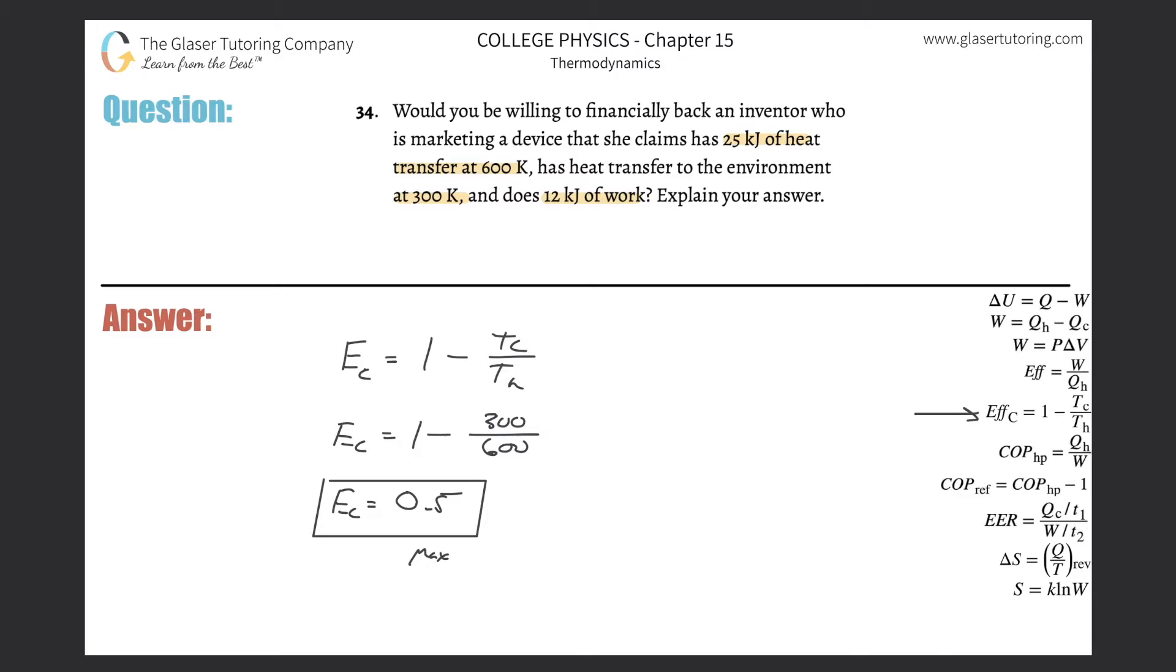The actual efficiency they're mentioning here in the problem is that it's doing 12 kilojoules of work, right? However, it's being added to the system is going to be 25 kilojoules of heat transfer. So essentially using now this particular formula at the top, this is basically the actual efficiency,